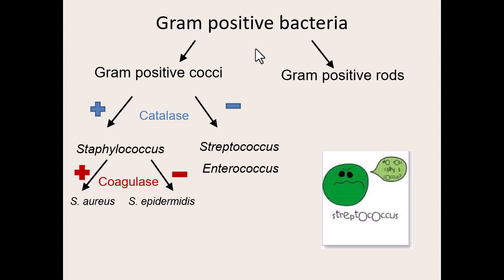Because there are a lot of gram-positive cocci bacteria, we sort them out by doing a test called a catalase test. We're actually going to do the catalase test today on bacteria in lab. A catalase test checks for some bacteria — primarily staphylococcus bacteria, though a few other genera can do it — that can make an enzyme called catalase. That's what we're testing for: the presence of this particular enzyme.